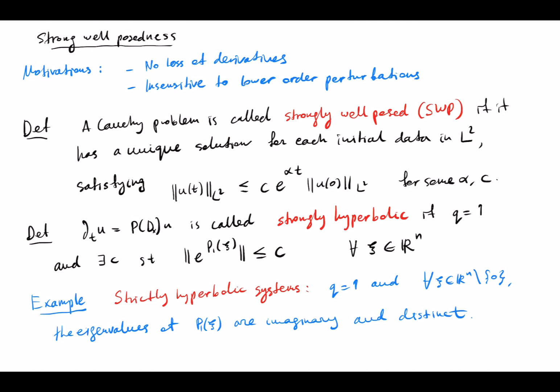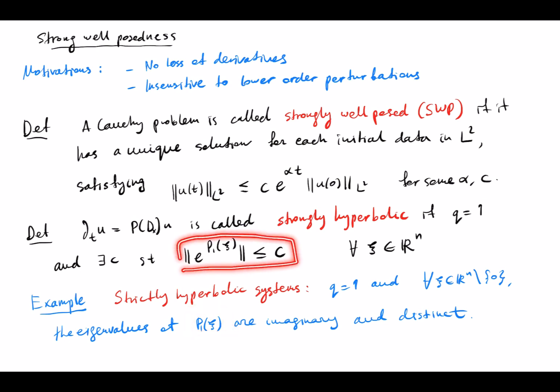One example of strongly hyperbolic operators is strictly hyperbolic systems. For strictly hyperbolic systems, the principal symbol has distinct and purely imaginary eigenvalues, and if this is the case it is not difficult to prove that this estimate holds.